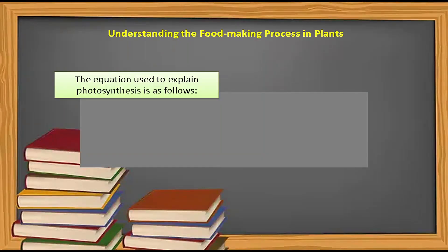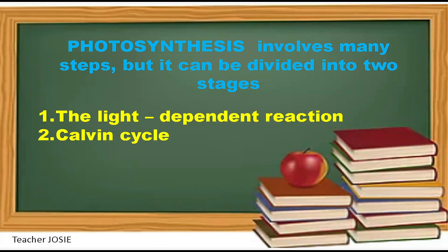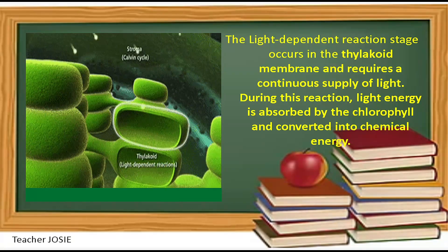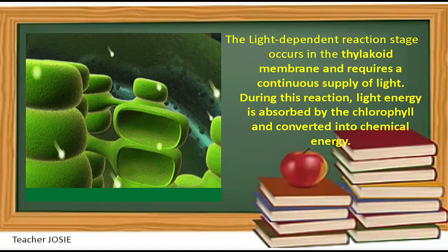The equation used to explain photosynthesis is: carbon dioxide and water with sunlight produces glucose and oxygen. Photosynthesis involves many steps but can be divided into two stages: the light-dependent reaction and the Calvin cycle. The light-dependent reaction stage occurs in the thylakoid membrane and requires a continuous supply of light. During this reaction, light energy is absorbed by the chlorophyll and converted into chemical energy.